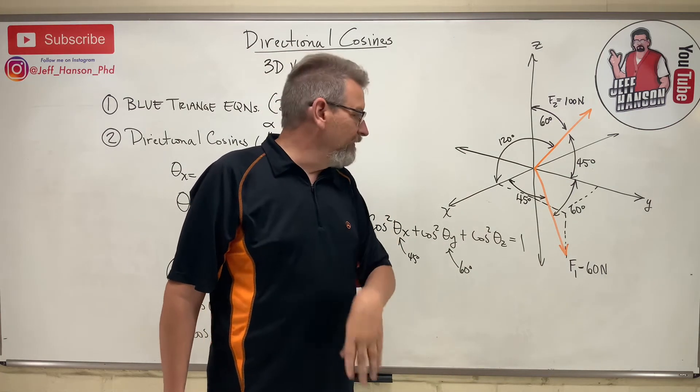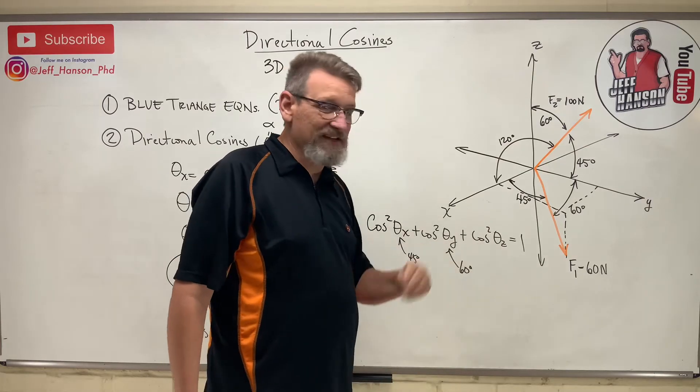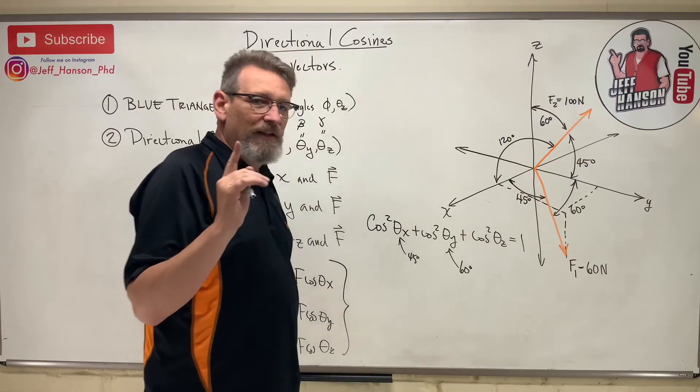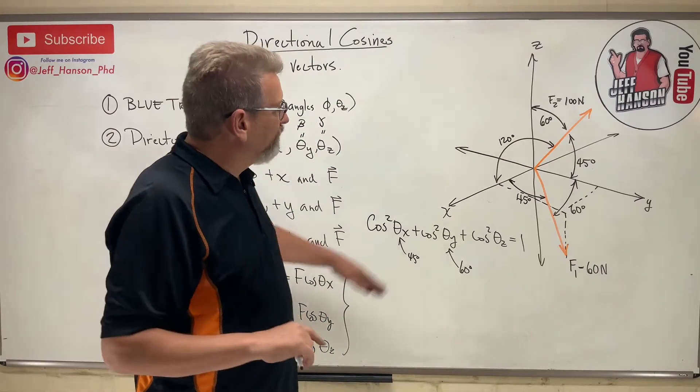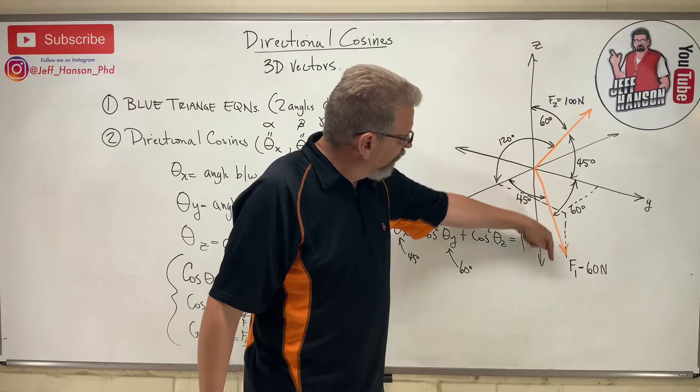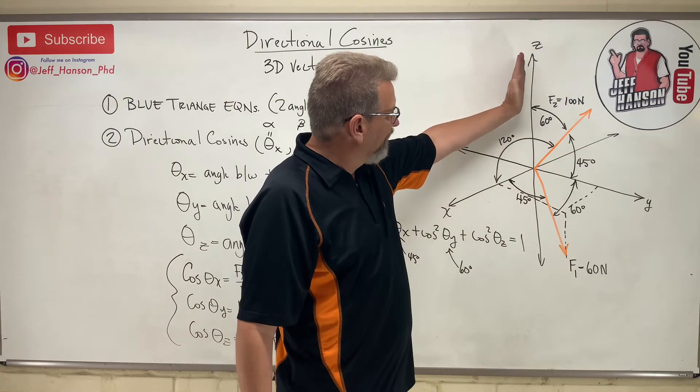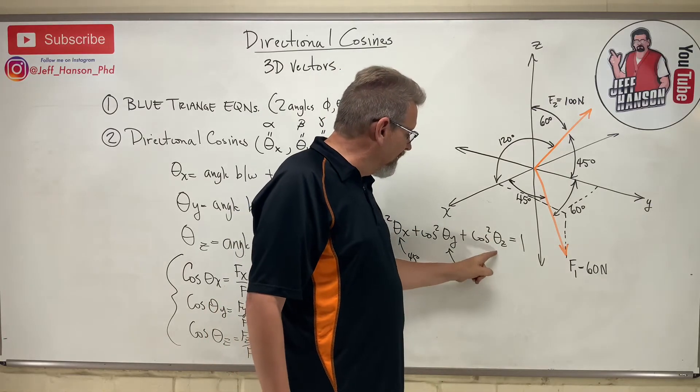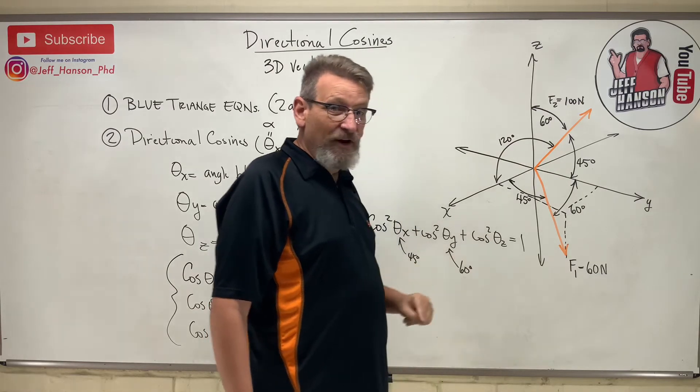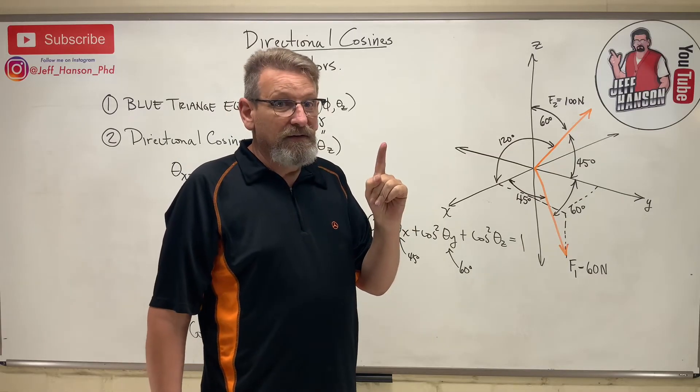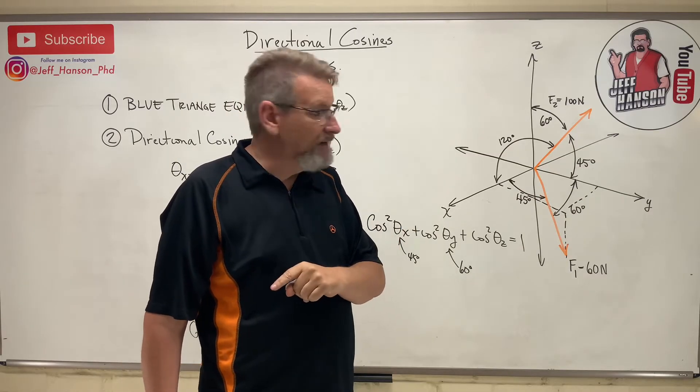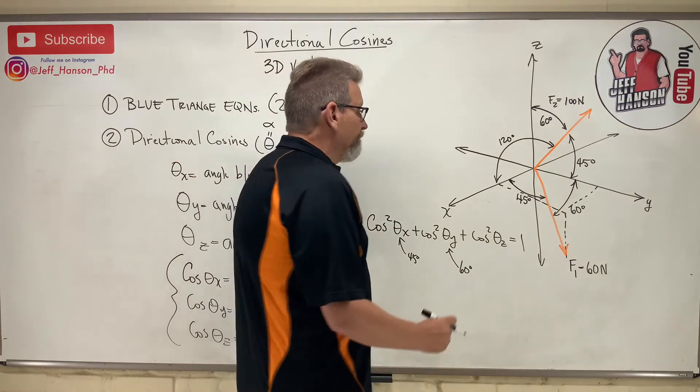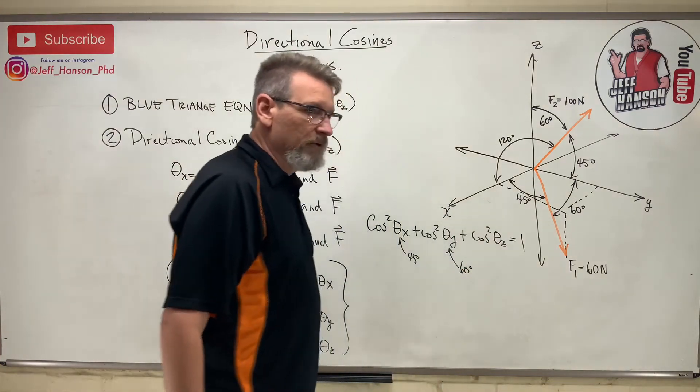Now let's talk about theta z. Theta z, what should it be? You got to understand where the vector is. This vector is in the quadrant going downhill. So theta z from positive z is going to be 90 plus whatever to get down to it. So I know that theta z here needs to be bigger than 90 degrees. It needs to be 120-ish degrees, wherever that is.